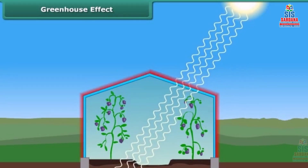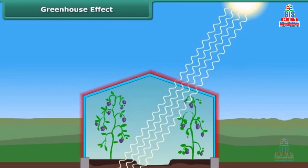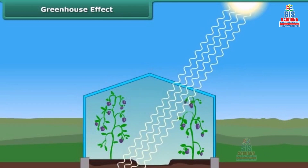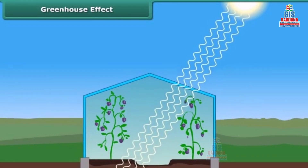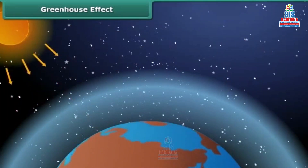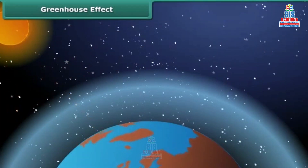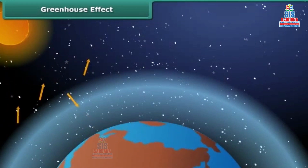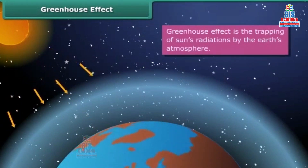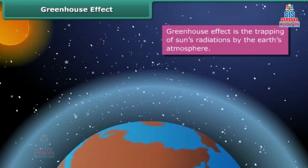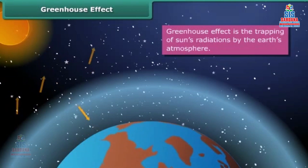Similarly, greenhouse gases like carbon dioxide, methane, and nitrous oxide in the atmosphere act like glass panes. When the sun's radiation reaches our atmosphere, some rays are reflected back into space and some are trapped by greenhouse gases, causing the atmosphere of the Earth to warm up.